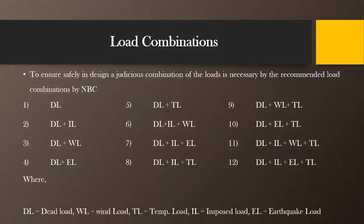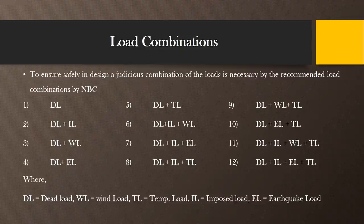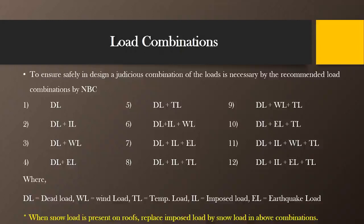The meanings of the abbreviations are: DL is dead load, WL is wind load, TL is temperature load, IL is imposed load, and EL is earthquake load. A note in IS 456 states that when snow load is present on the roofs, we have to replace the imposed load with snow load in the above combinations. So whenever you have to consider snow load, instead of considering the imposed load, you have to consider the snow load. For example, if you consider the second combination and are accounting for snow load, the combination shall be taken as dead load plus snow load. This covers the loads and load combinations.